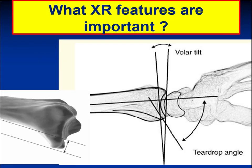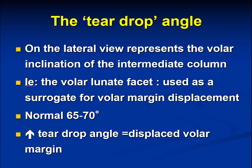A shear is what is represented by a volar marginal fracture. In the absence of advanced imaging, a true lateral radiograph can help assess the shear injury with the help of the teardrop angle. In other words, the teardrop angle may be used as a surrogate for displacement of the intermediate column or the volar lunate facet.